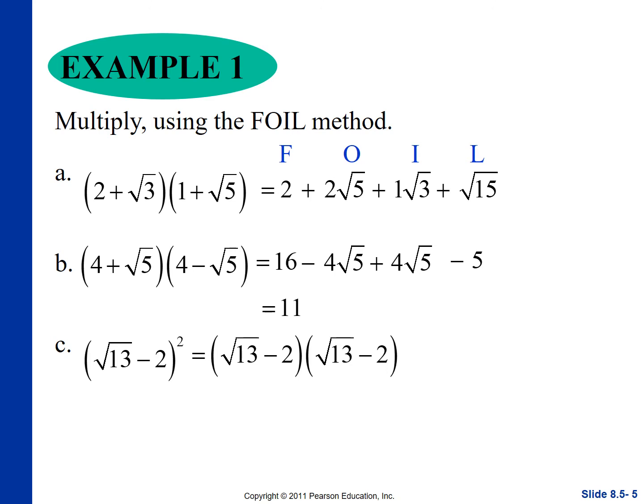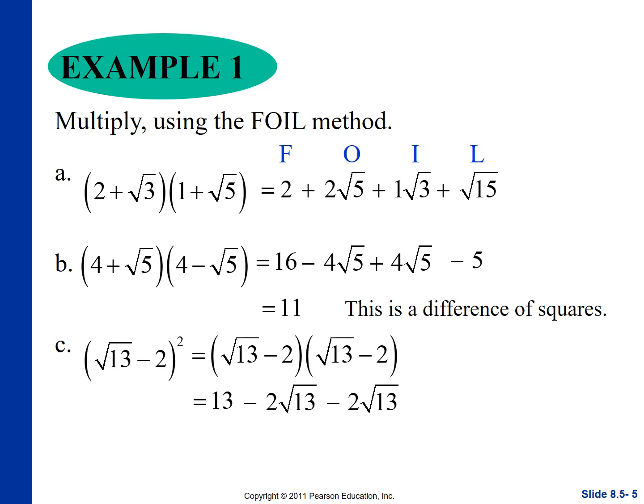The last one is squaring a binomial using the perfect square method. Square the first term: √13 squared = 13. Twice the product of the two terms: 2 times negative 2 = negative 4, times √13 gives you -4√13. Square the last term: (-2)² = 4. Combine to get 17 minus 4√13.